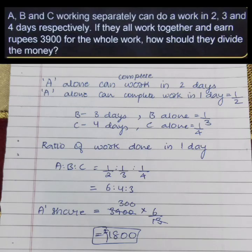A, B and C working separately can do a work in 2, 3 and 4 days respectively. If they all work together and earn Rs. 3900 for the whole work, how should they divide the money?